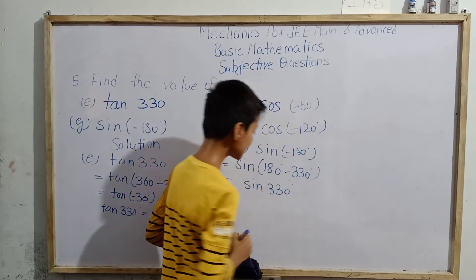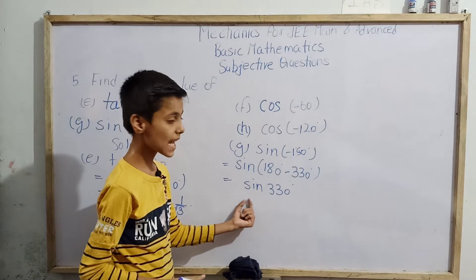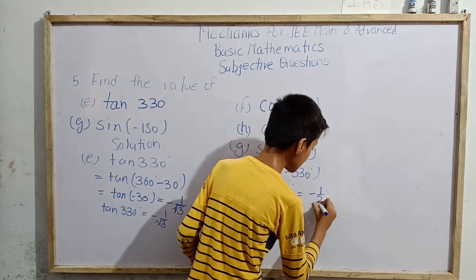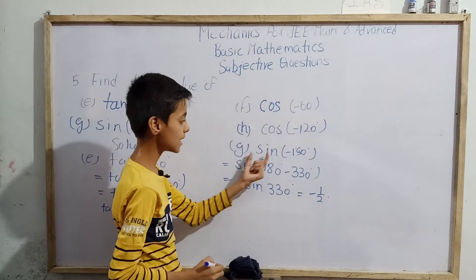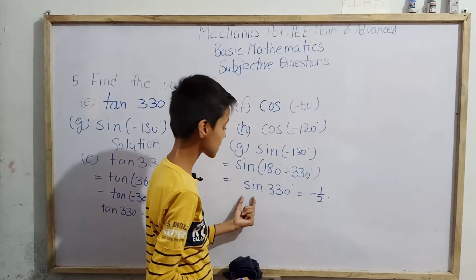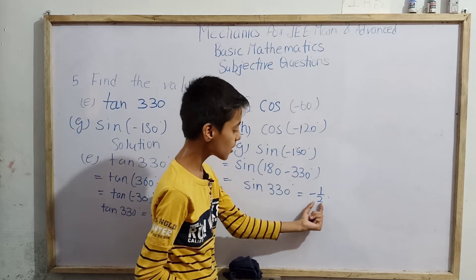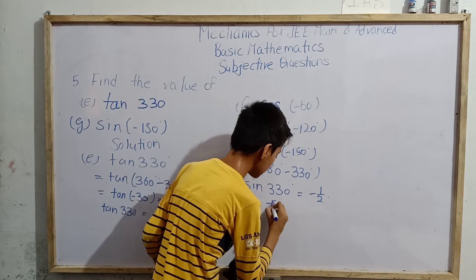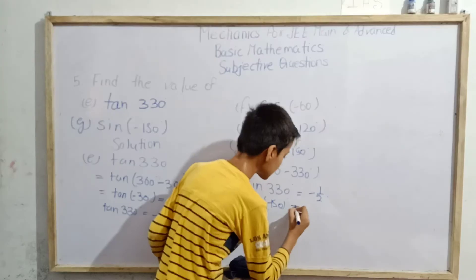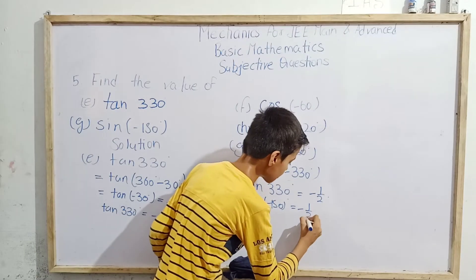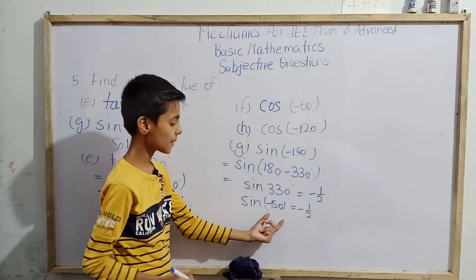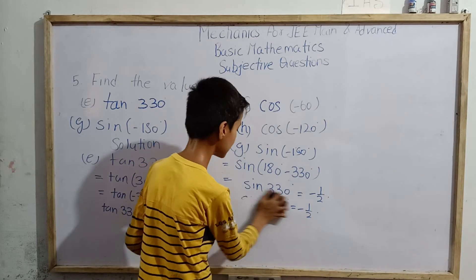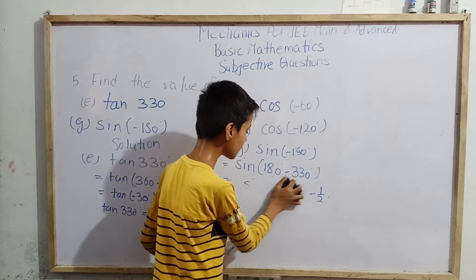We know sin 330° = -1/2. Therefore sin(-150°) = sin(330°) = -1/2. The answer for part g is -1/2.